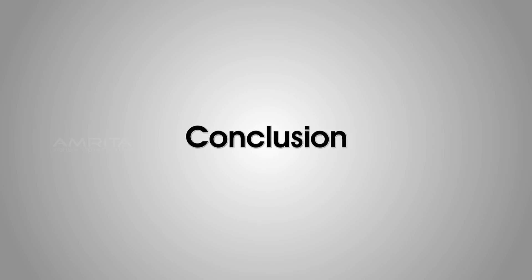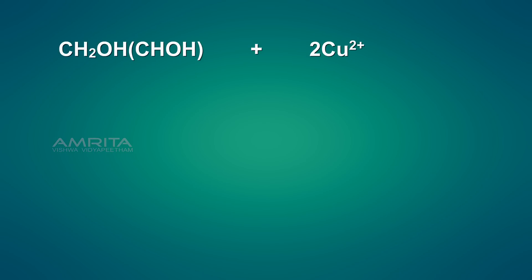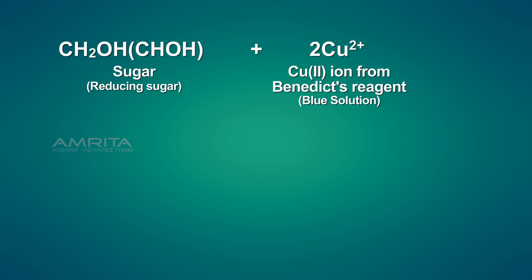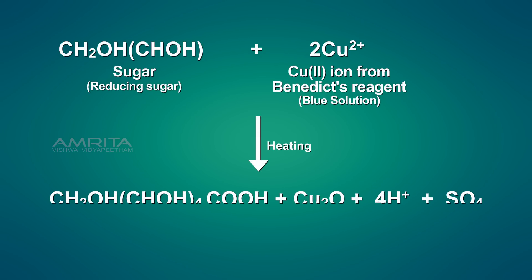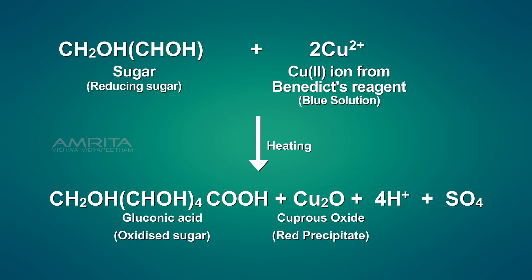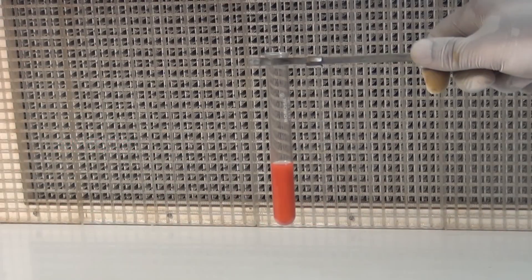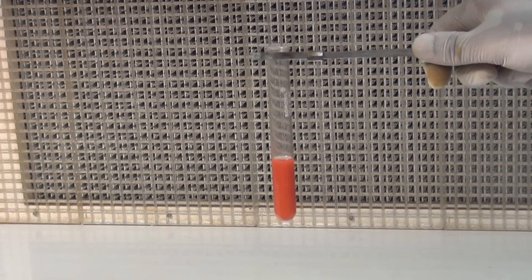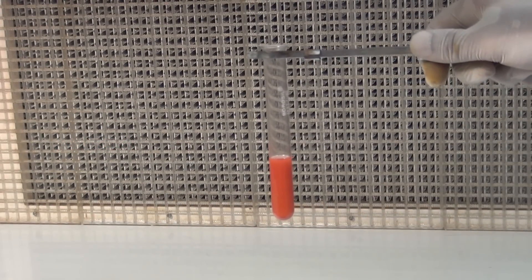Conclusion: On boiling the urine sample with the Benedict's reagent, the cupric ion present in the Benedict's reagent is reduced by the reducing agent, sugar, to form a brick red coloured precipitate of cuprous oxide. Therefore, sugar is present in the urine sample.